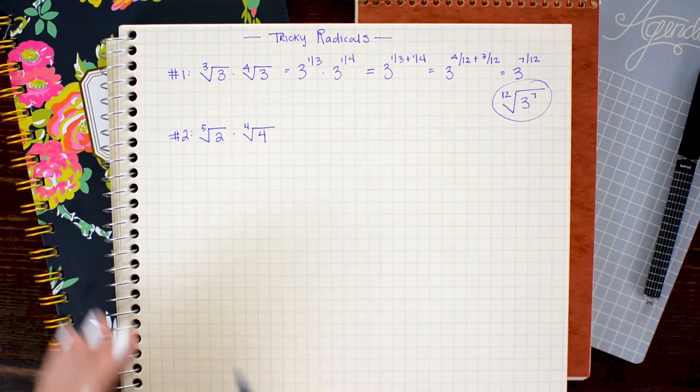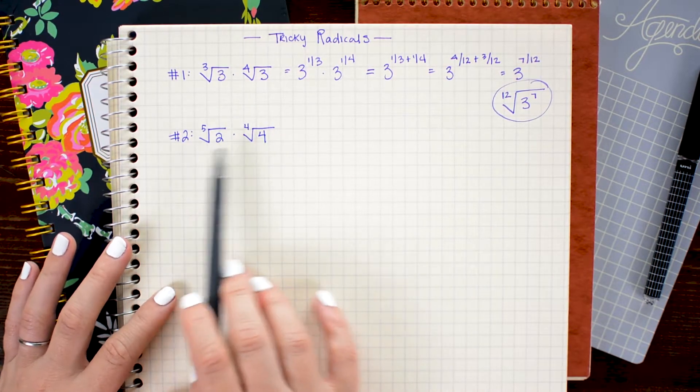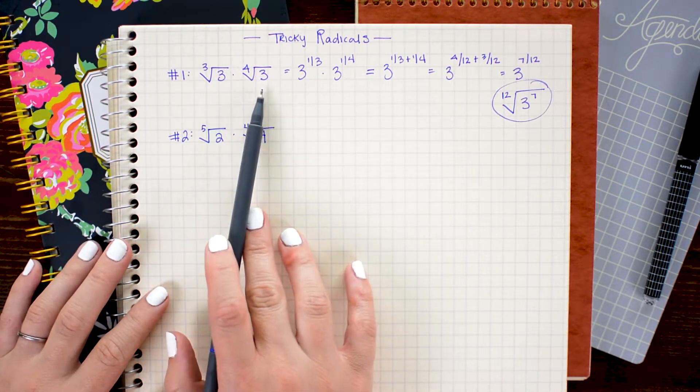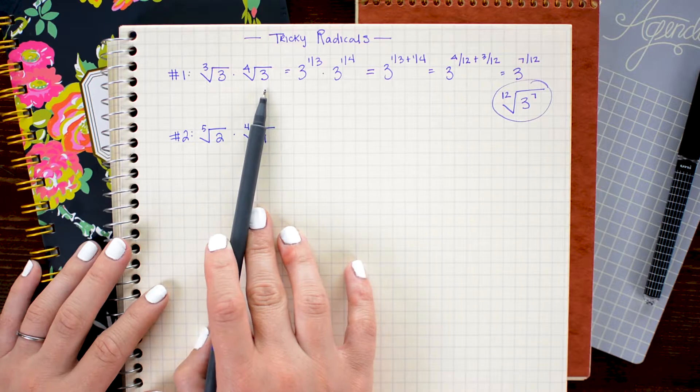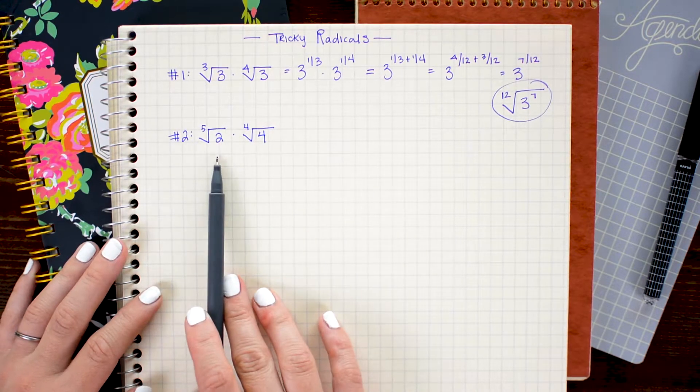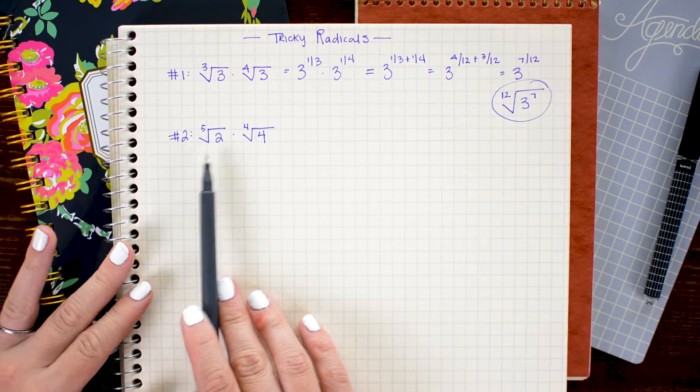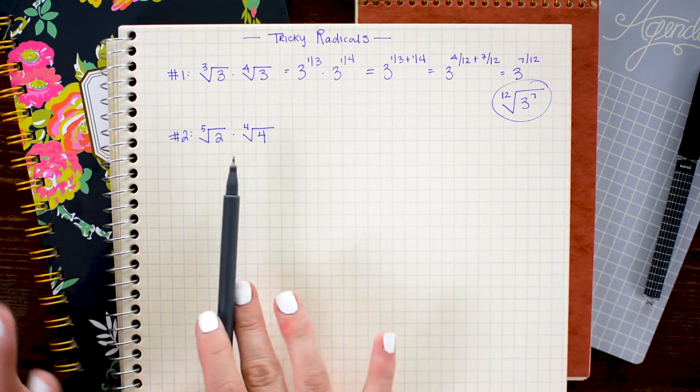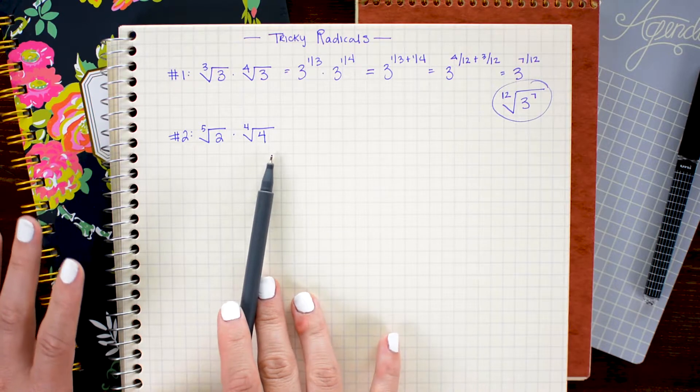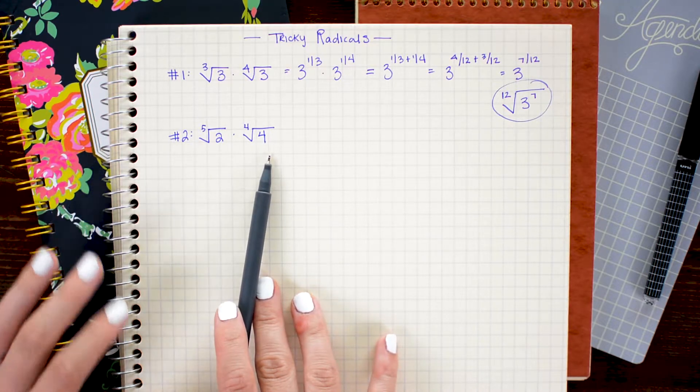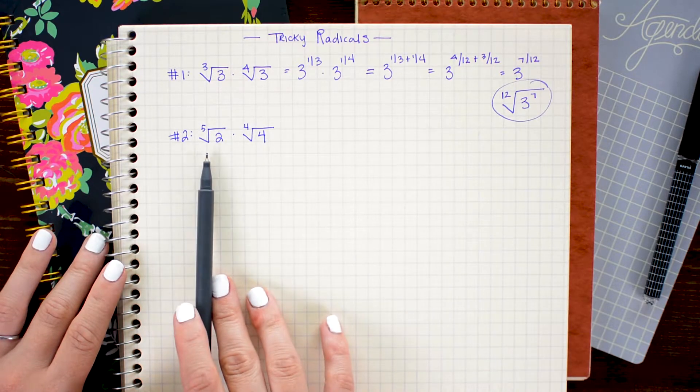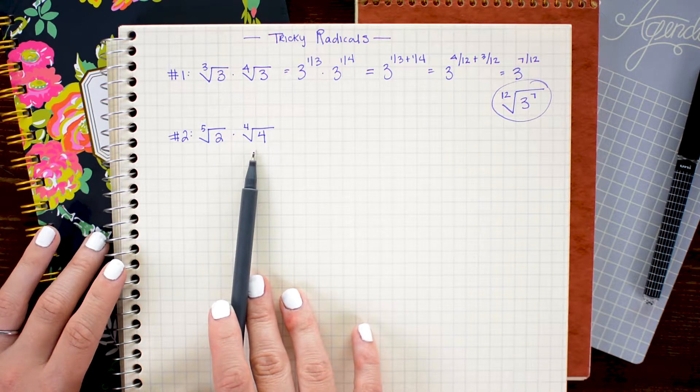So in the last problem I said that in order to multiply radicals with different indices we had to have the same number underneath the radical, and here on the second problem I'm going to show you how you can sometimes get away with having different numbers under the radical as long as you're a little clever and the numbers work out nicely. So again just like in the last step I'm going to start with replacing the 5th root and 4th roots with their rational exponent equivalents.